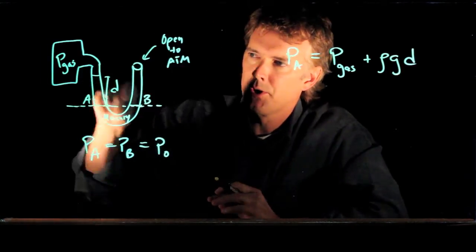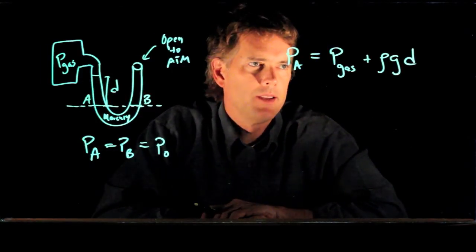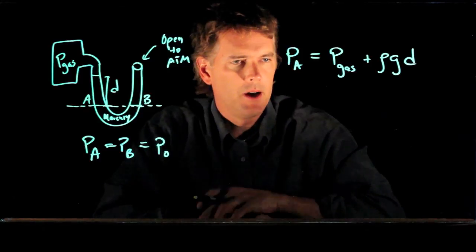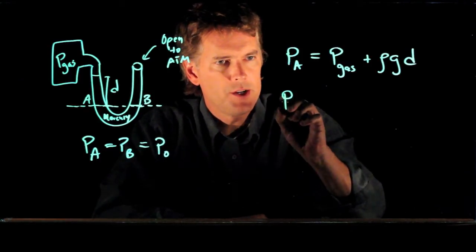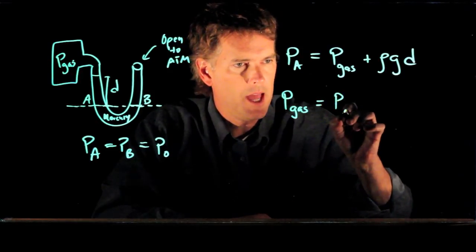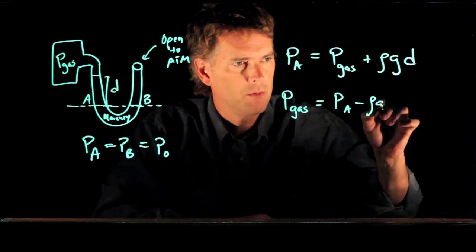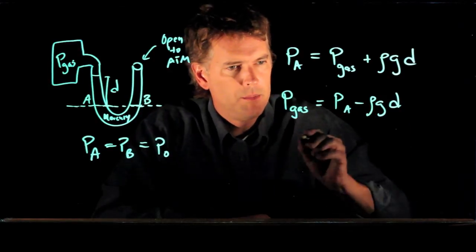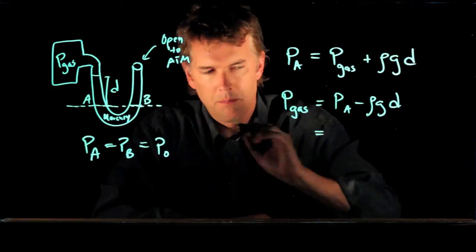D is the height of the mercury that is above our point A. Alright, and so now we can solve this for pressure in the gas chamber. Pressure in the gas chamber is P A minus rho G D. P A we just said was P naught.